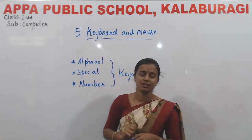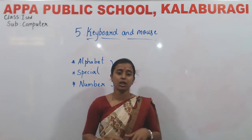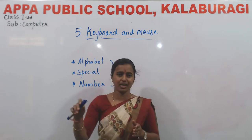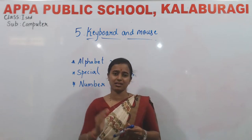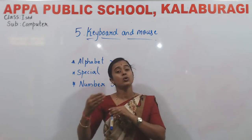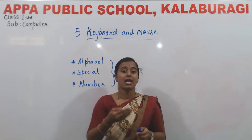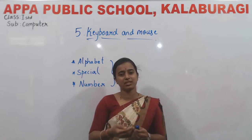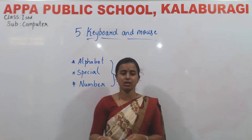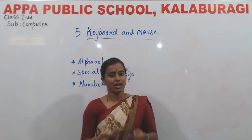Next is number keys. What is the use of number keys? We have totally two sets of number keys on the keyboard — one on the top side and one on the right side. We have two sets of number keys from 0 to 9. Using the number keys, we can type numbers, which are used to calculate subtraction, addition.